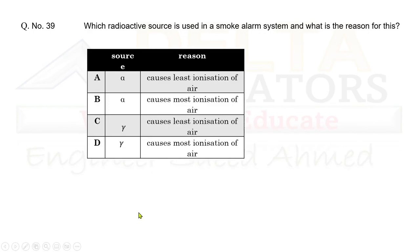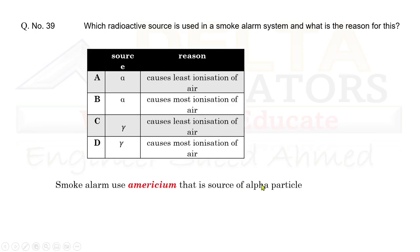Question 39: Which radioactive source is used in a smoke alarm system and why? Americium is used because it is a source of alpha particles. Alpha particles are used because they cause the most ionisation of air. Correct option is B — source is alpha particle, reason is it causes most ionisation of air.